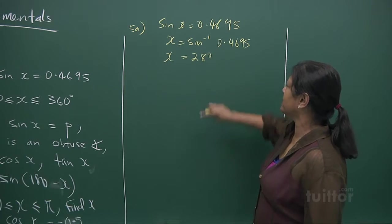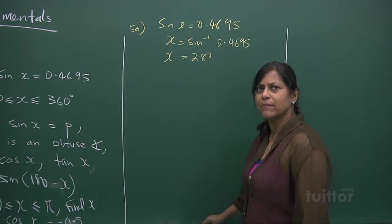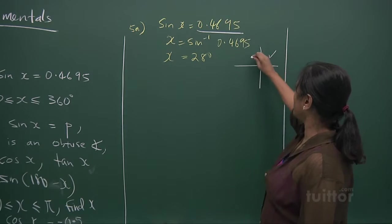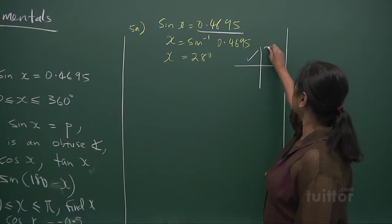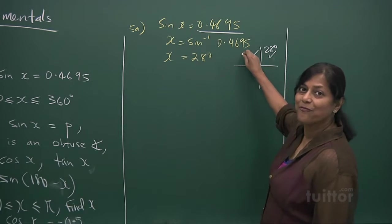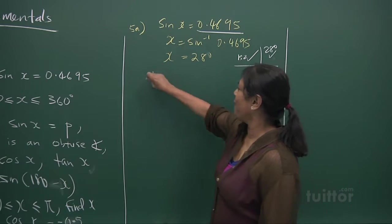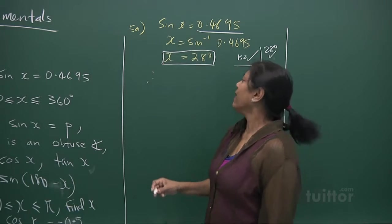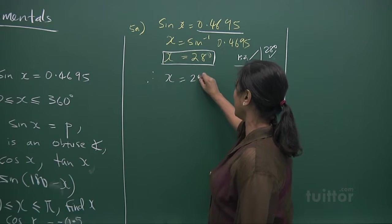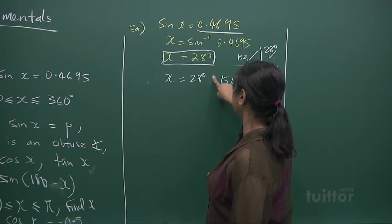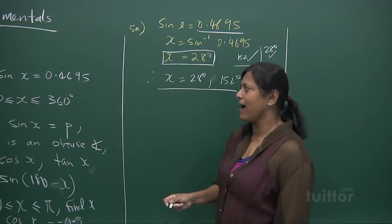But they want all answers relating to 28 degrees, and it's positive. So where does it lie? It's in this quadrant and this quadrant. If your x is 28 degrees, 180 minus 28, you have 152. So therefore, this is called the basic angle. Your x is going to be 28 and 180 minus 28 is 152 degrees. These are the two answers.